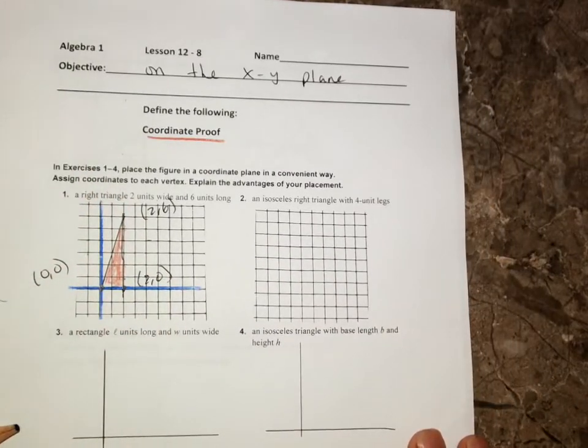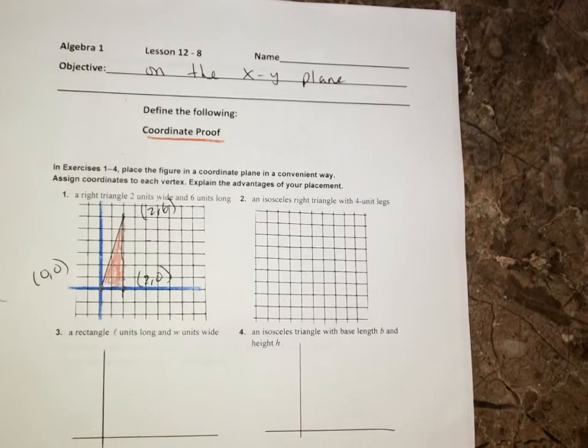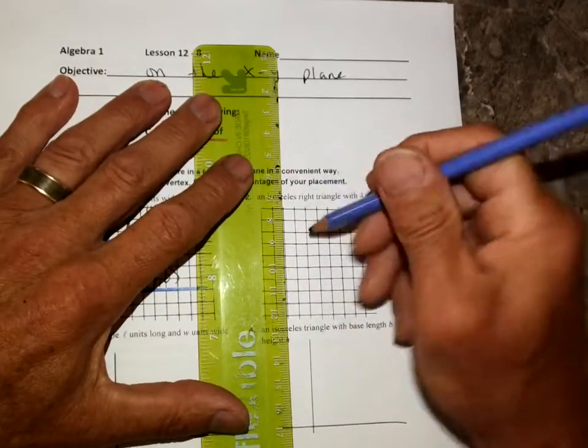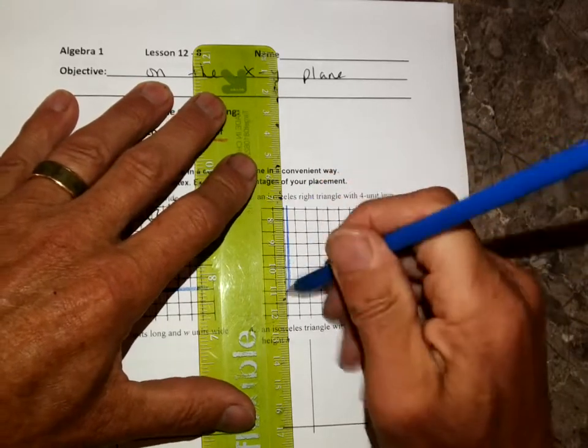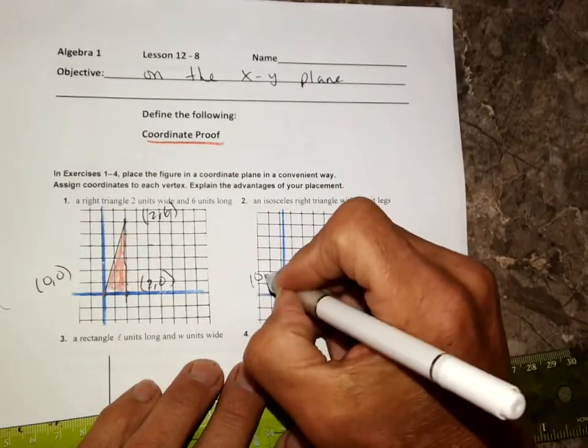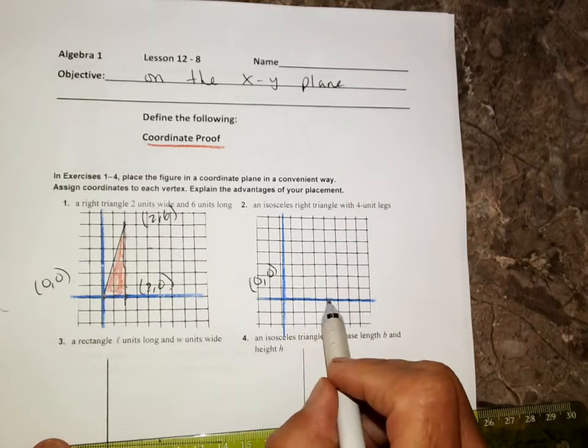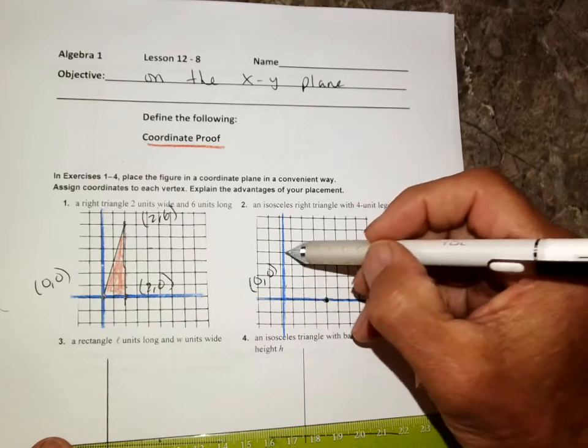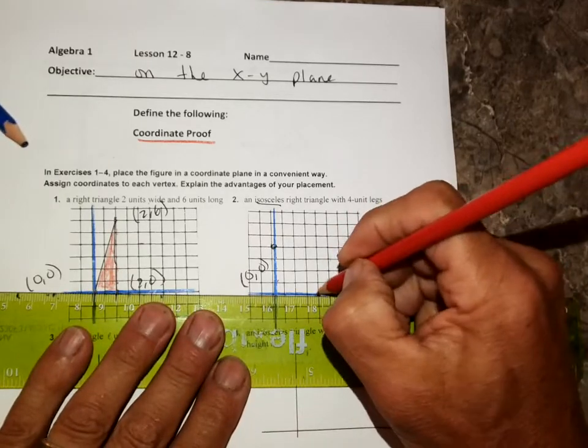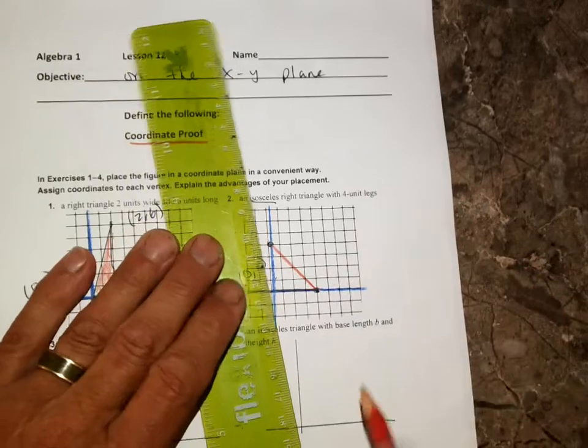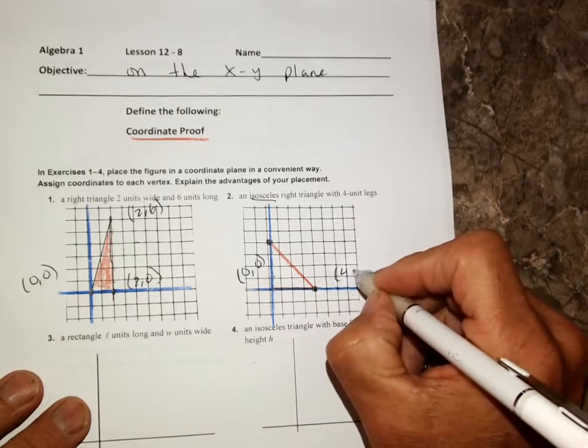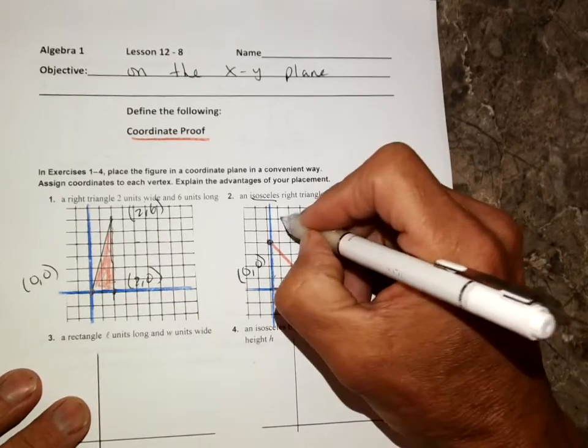An isosceles right triangle with four unit legs. Again, I think the easiest way to do this one is to put it at the origin. I like to start at the origin, it's 0, 0. I'm going to go 1, 2, 3, 4, and I'm going to go 1, 2, 3, 4, because it's isosceles. My coordinates of my triangle are 0, 0, at 4, 0, and at 0, 4.